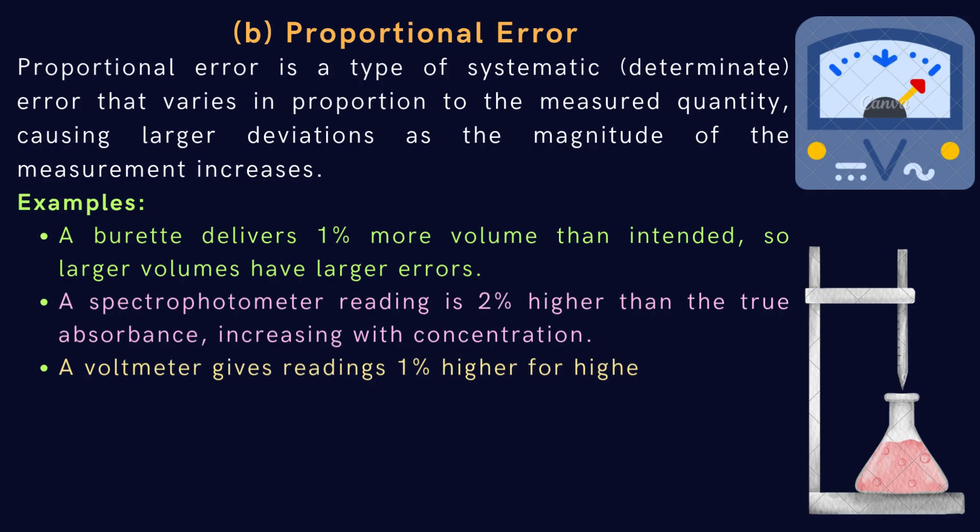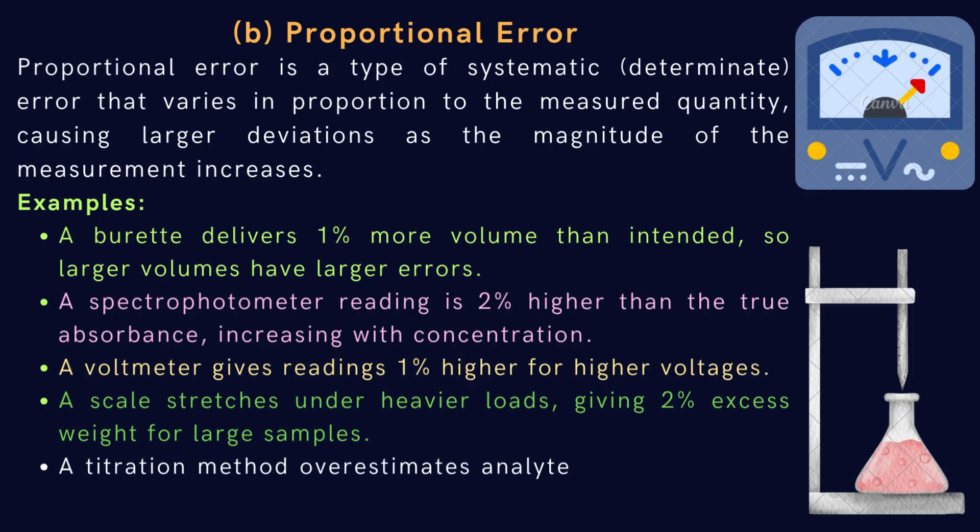A scale stretches under heavier loads, giving 2% excess weight for large samples. A titration method overestimates analyte concentration by 1%, proportional to the amount titrated. Proportional errors can be corrected by calibration and careful procedure design.